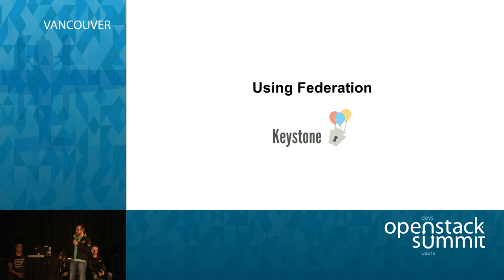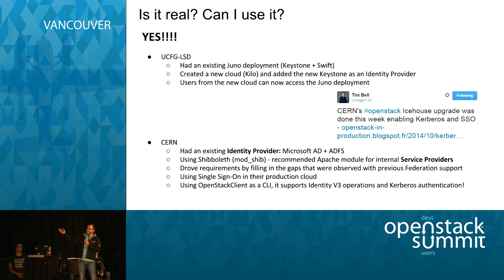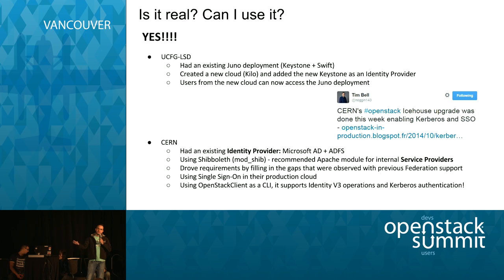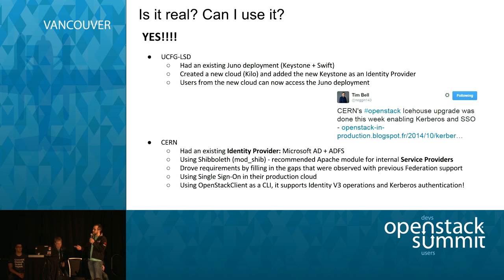So, using Federation — can you use it? Morgan showed yesterday that you can. At the university, we had a use case with a Juno deployment with Keystone and Swift, and we wanted to add a new cloud and have users from that new cloud access the previous deployment. We used Keystone-to-Keystone, and now users from the new Kilo cloud have access to the old Juno deployment. Everything works.